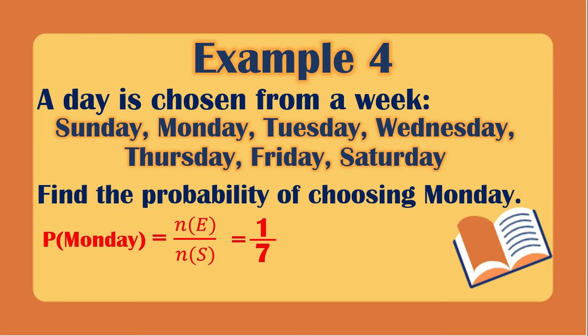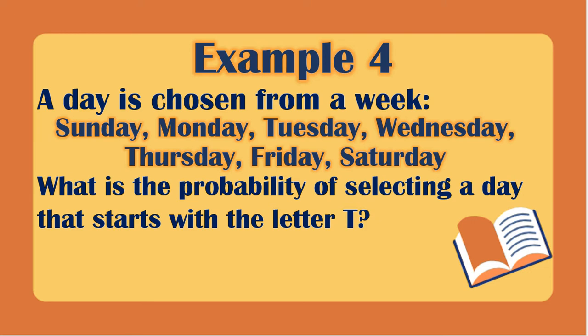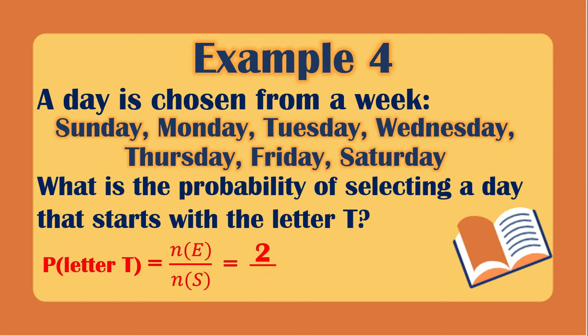The probability of getting Monday is 1/7. What is the probability of selecting a day that starts with the letter T? The favorable outcome is 2, since we have Tuesday and Thursday, over the total of 7. So the probability is 2/7.